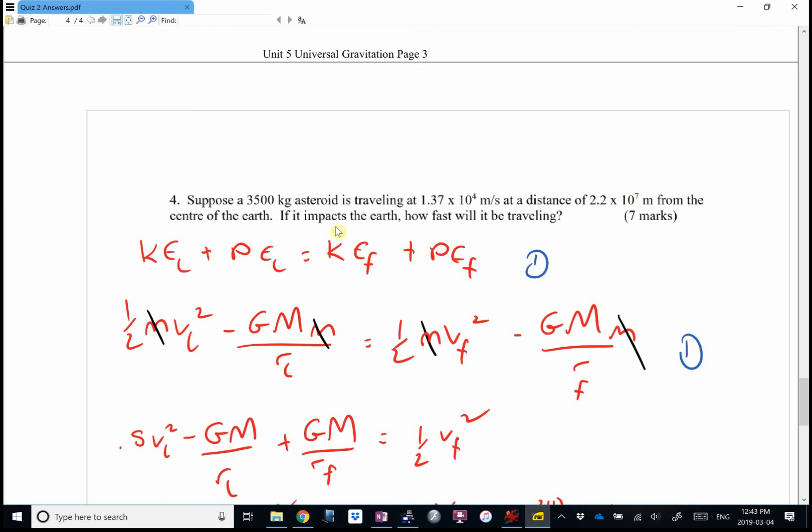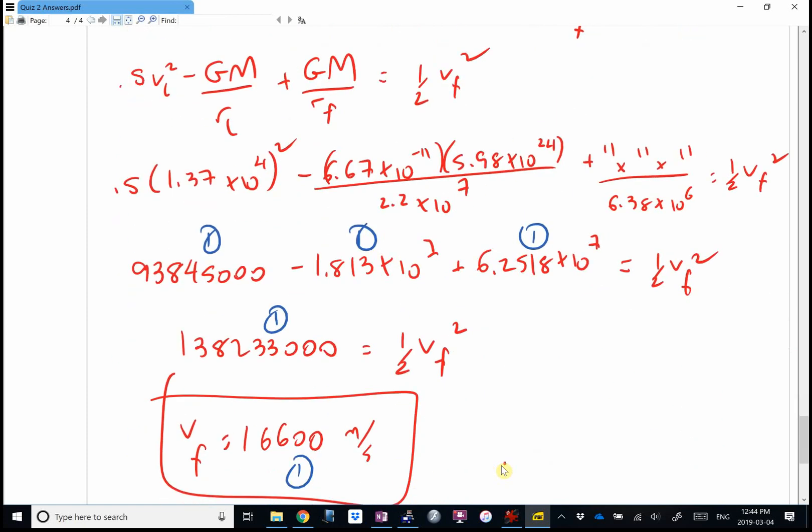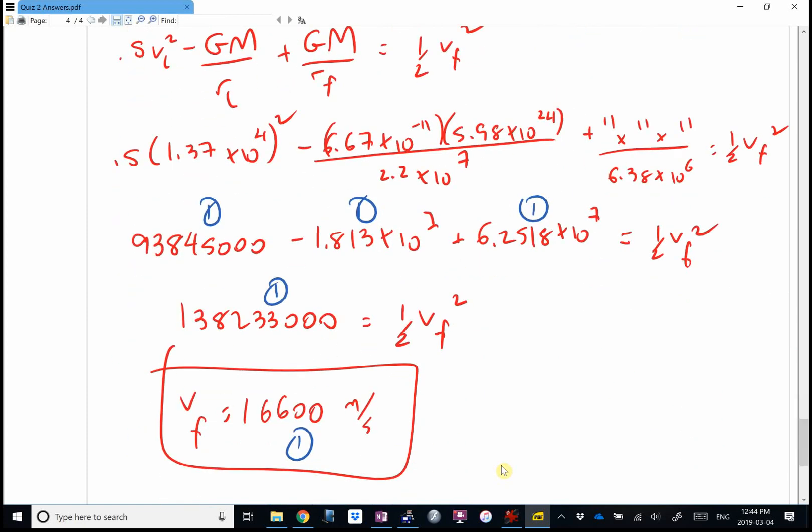I double checked. We're near the earth, so big M is going to be 5.98 × 10^24. Our initial is going to be up there in space. They gave me the distance from the center, so I know that this is a radius. I ended up getting for the kinetic energy, I canceled out the M's and I didn't multiply by 2. Some people chose to multiply by 2. I decided, you know what, I'm going to do that at the very end because this is ugly. So I got 93845000 minus 1.813 × 10^7 plus 6.2518 × 10^7 equals ½V² times by 2 square root. Not divide by M. Just times by 2 square root. I got 16,600.